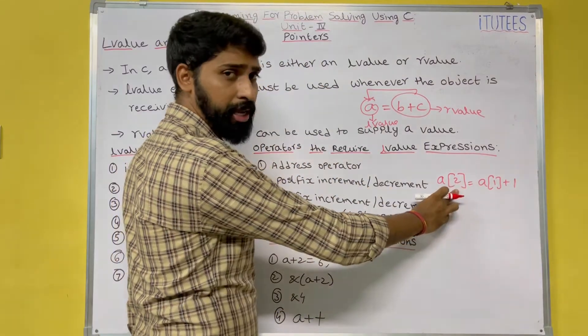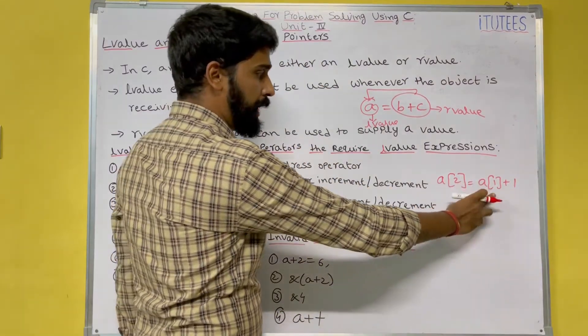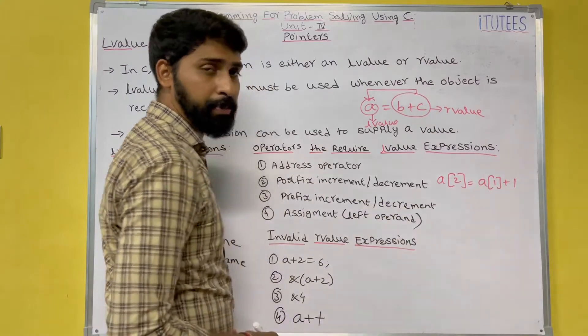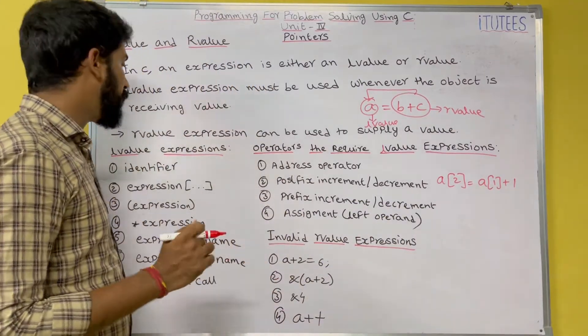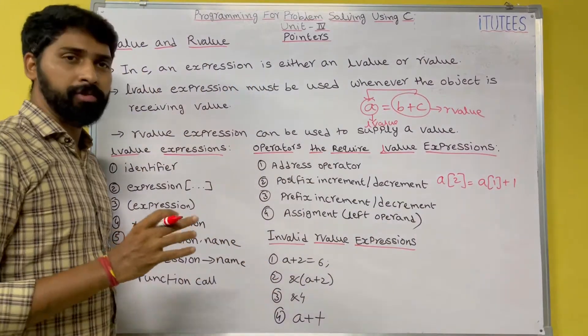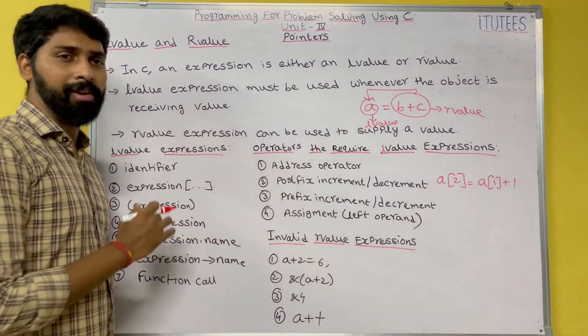Now, in 'a[2] = a[1] + 1', 'a[2]' is the l-value and 'a[1] + 1' is the r-value. Now let's look at l-value expressions. The first one is an identifier — for example, 'a' in 'a = 5' is an identifier expression.